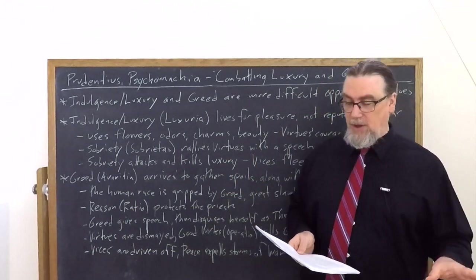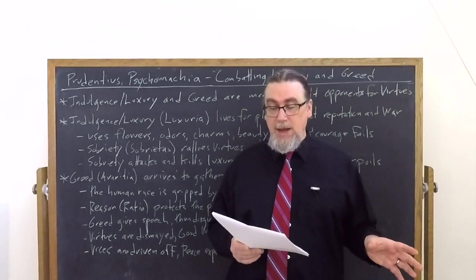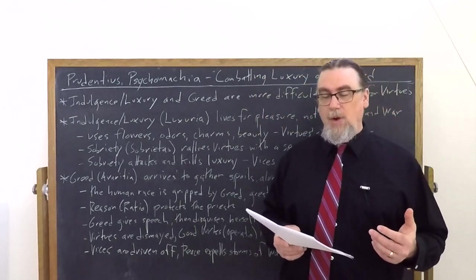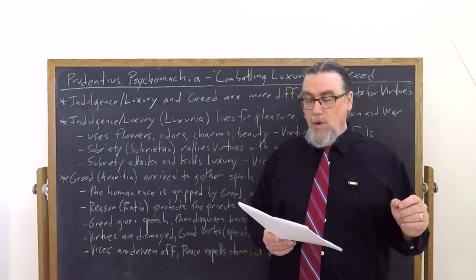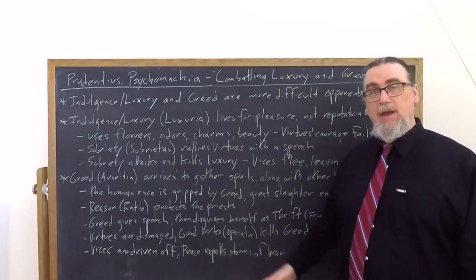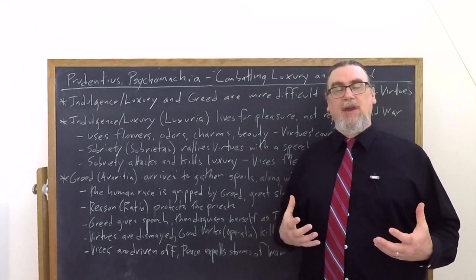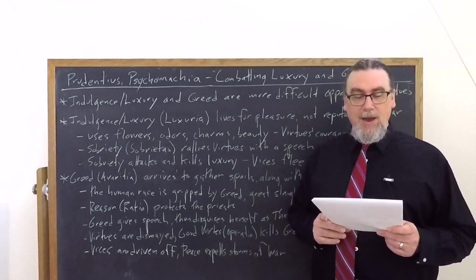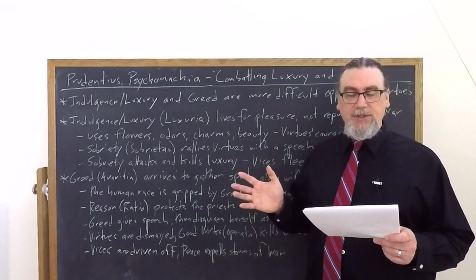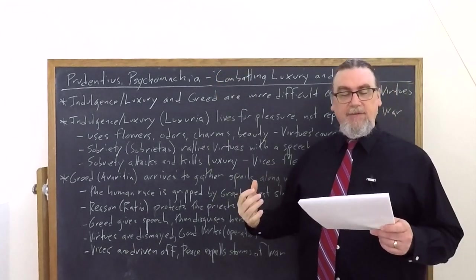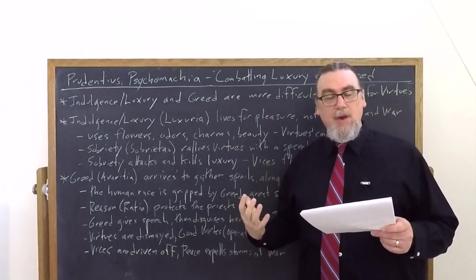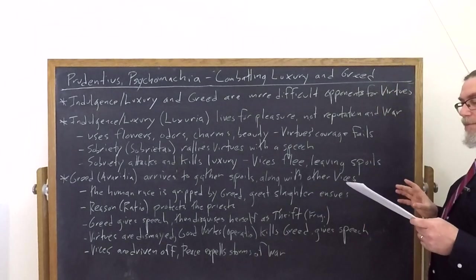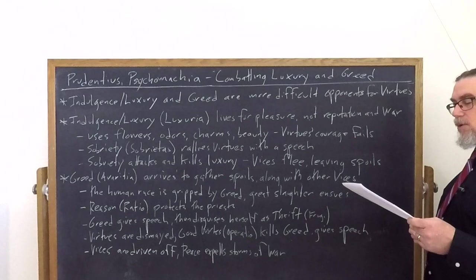Of all the vices, Prudentius tells us, there is none more frightening than greed. Greed wraps the lives of human beings in calamities. They only escape when they're thrown to hell's fire, something even worse. And so, fortunately, Reason, Ratio, is there to protect, as Prudentius will tell us, the priests, the tribe of Levi, her foster son. She covers them with her great shield and saves them from the deadly rush of greed. With reason's assistance, the priests are saved and remain strong and uninjured in the battle. Only a few of them feel the lance of greed and are only scratched.